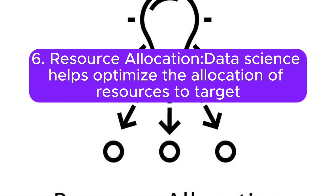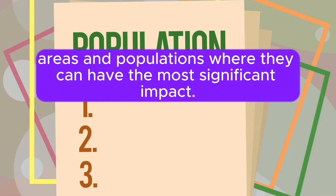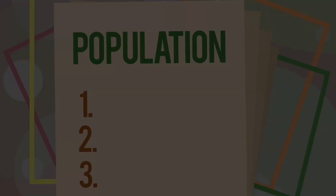Resource Allocation. Data science helps optimize the allocation of resources to target areas and populations where they can have the most significant impact.